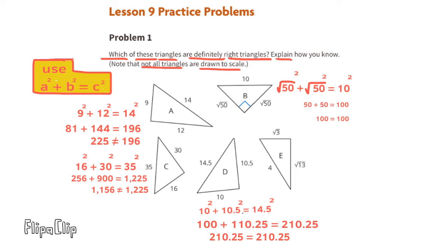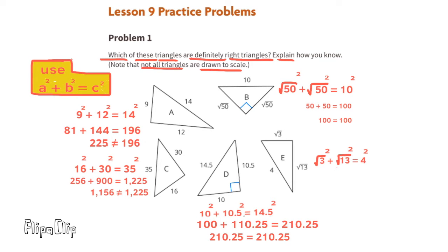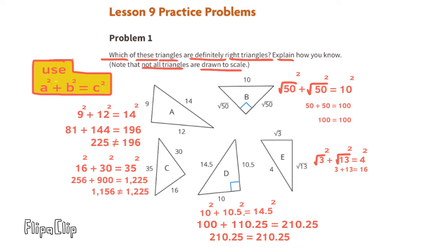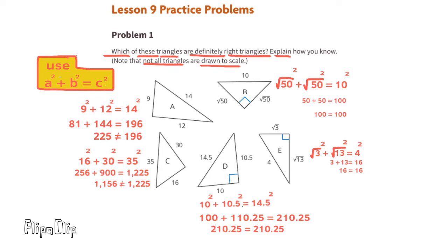Since 10 squared plus 10.5 squared does equal 14.5 squared, triangle D is a right triangle. Since the square root of 3 squared plus the square root of 13 squared equals 4 squared, triangle E is a right triangle.